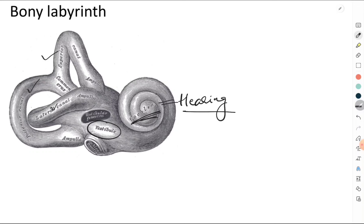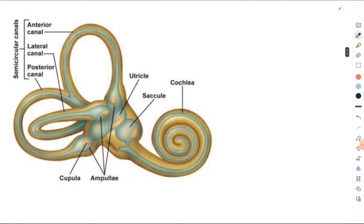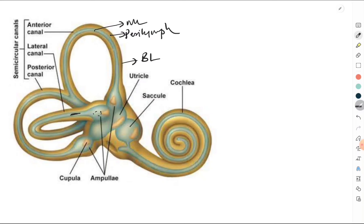Inside the bony labyrinth there is a system of membranous tubules called the membranous labyrinth. The outer part is the bony labyrinth and the inner part is the membranous labyrinth. The fluid present between the membranous labyrinth and the bony labyrinth is called the perilymph. Inside the membranous labyrinth there is also a fluid called the endolymph.